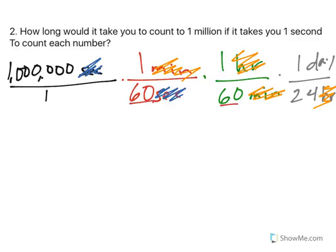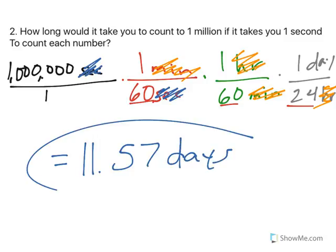And I know there are 24 hours in one day. So let's stop there, after we cancel out our labels. All of these numbers, 60, 60, and 24 on the denominator, so 1 million divided by 60, divided by 60, divided by 24, and I end up with 11.57 days. So if you count nonstop for 11 and a half days at one second per number, you will get to 1 million.